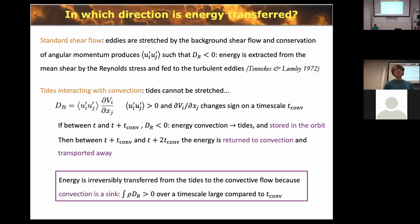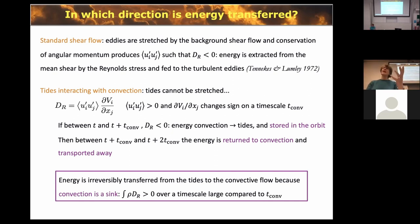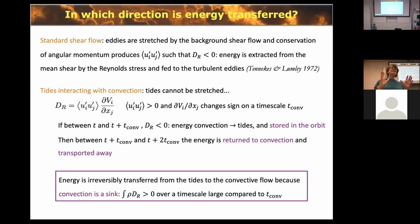Therefore, averaged over a timescale longer than the convective timescale, there is a net transfer of energy from the tide to convection, because that is the only sink. This is equivalent to saying D_R is positive on average. I know this is speculative and Adrian might argue about it, but I cannot think of where else that energy goes. The idea now is to go further and make the case for this process.